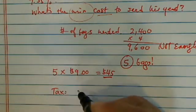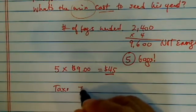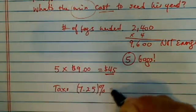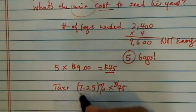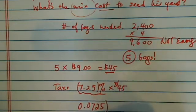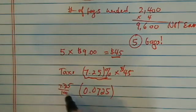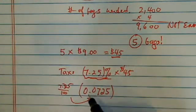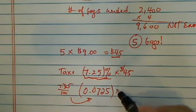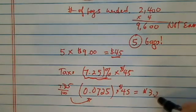Tax. There's only one thing for certain, tax and death, right? So tax is 7.25% times $45. You've got to convert it into a decimal by moving the decimal point twice. So this is literally 7.25 over 100, which equals the decimal formation of 0.0725 times $45. Now on my calculator, this is about $3.26.